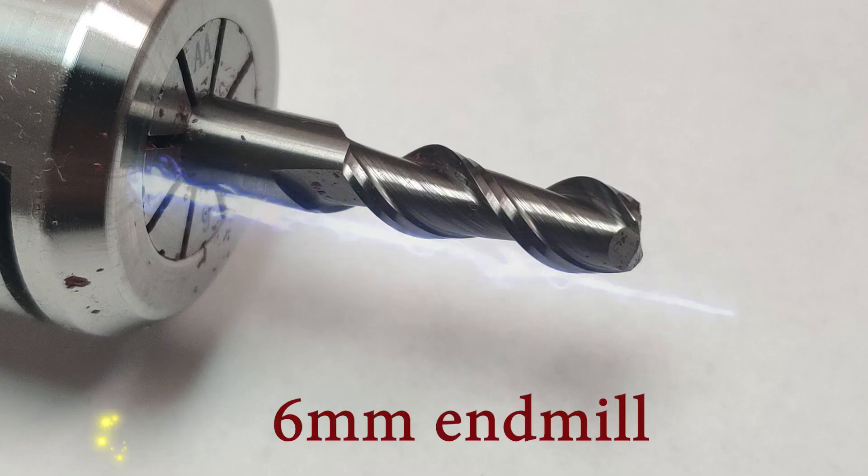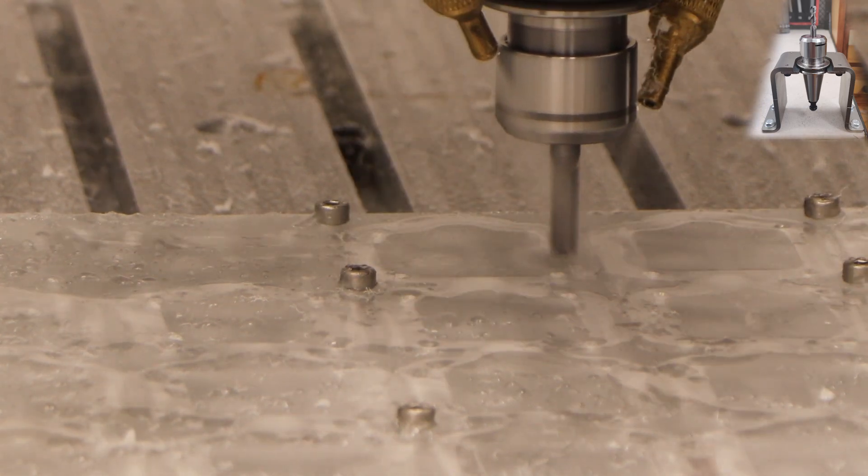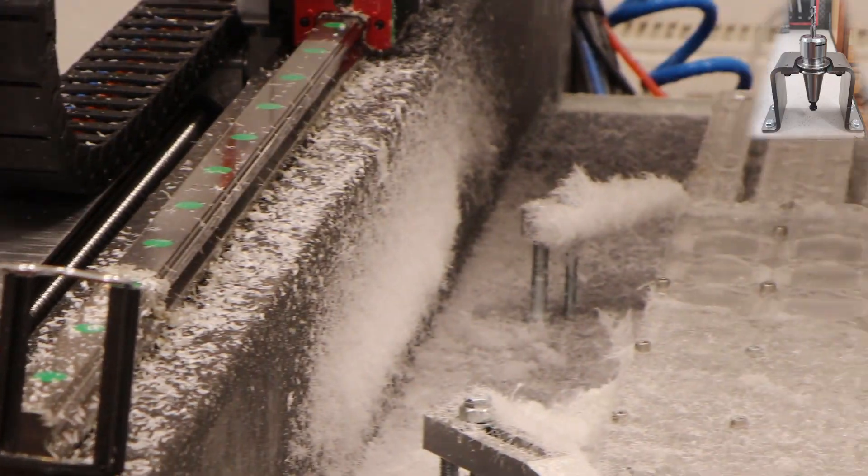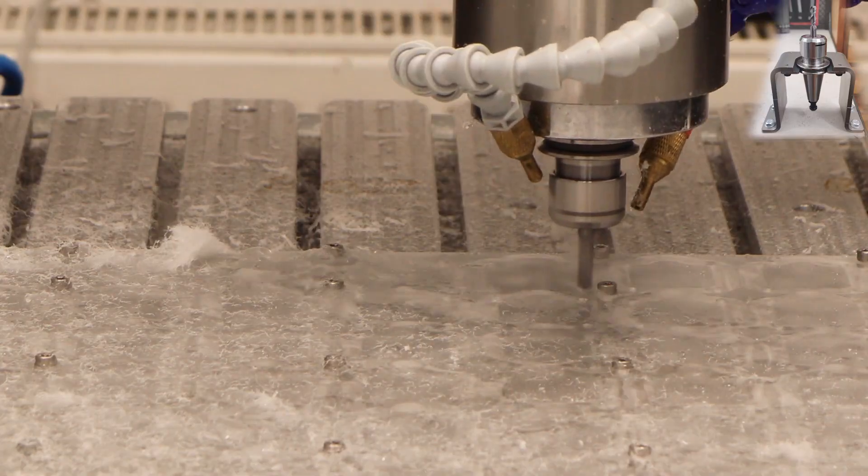This is 6mm end mill. This is the first operation. It is our reference surface from which we will be measuring dimensions of all independent parts.